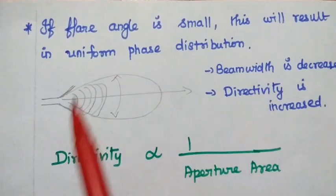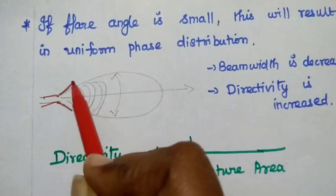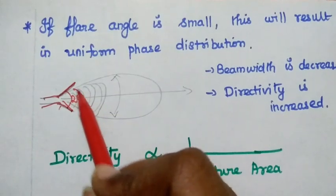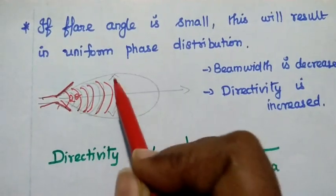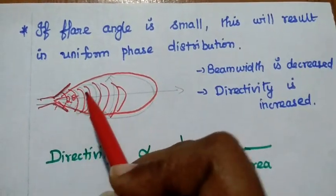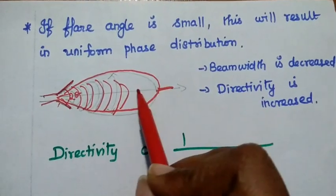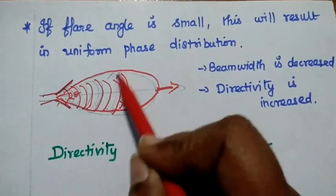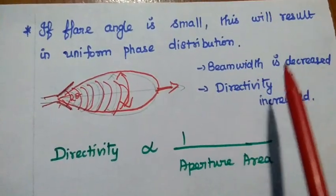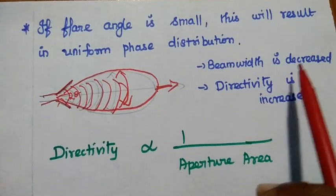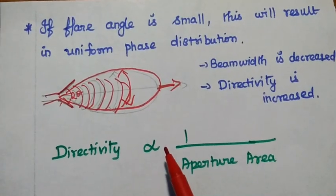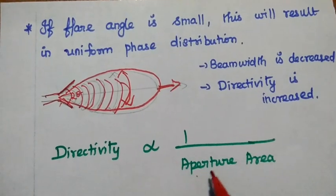If the flare angle is small, the maximum signal concentrates in one particular direction, increasing directivity. Beam width is reduced, and maximum signal is transmitted in that direction. So if the flare angle is small, this results in uniform phase distribution, decreased beam width, and increased directivity.